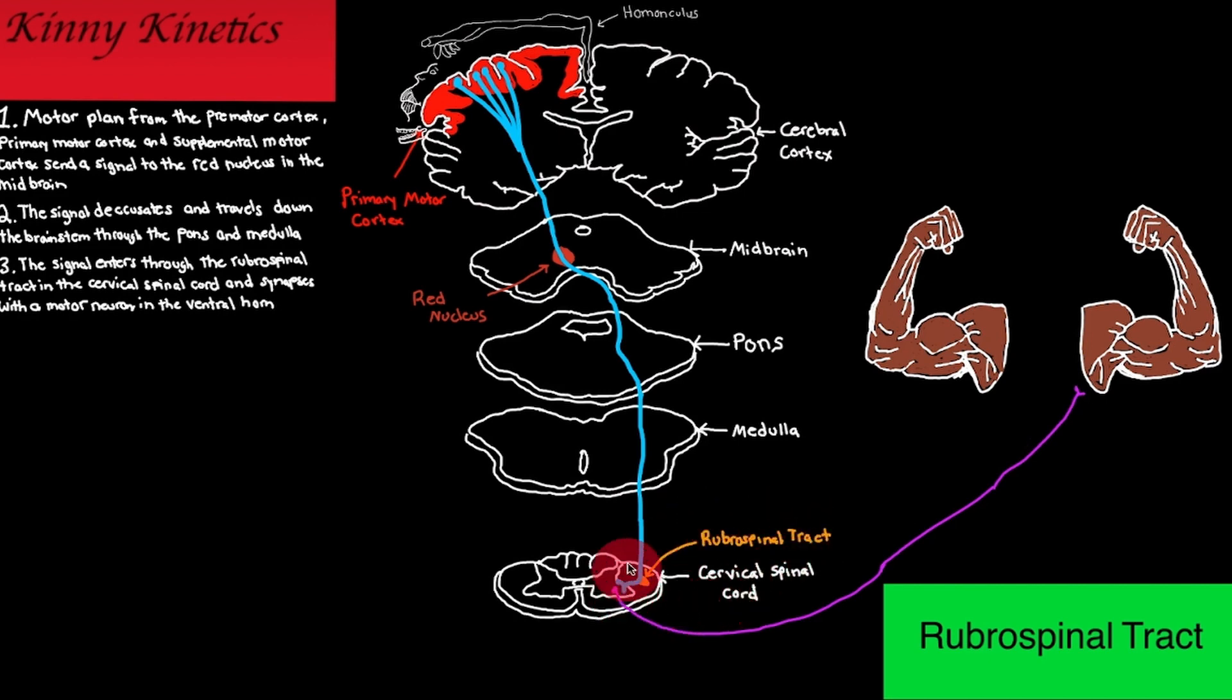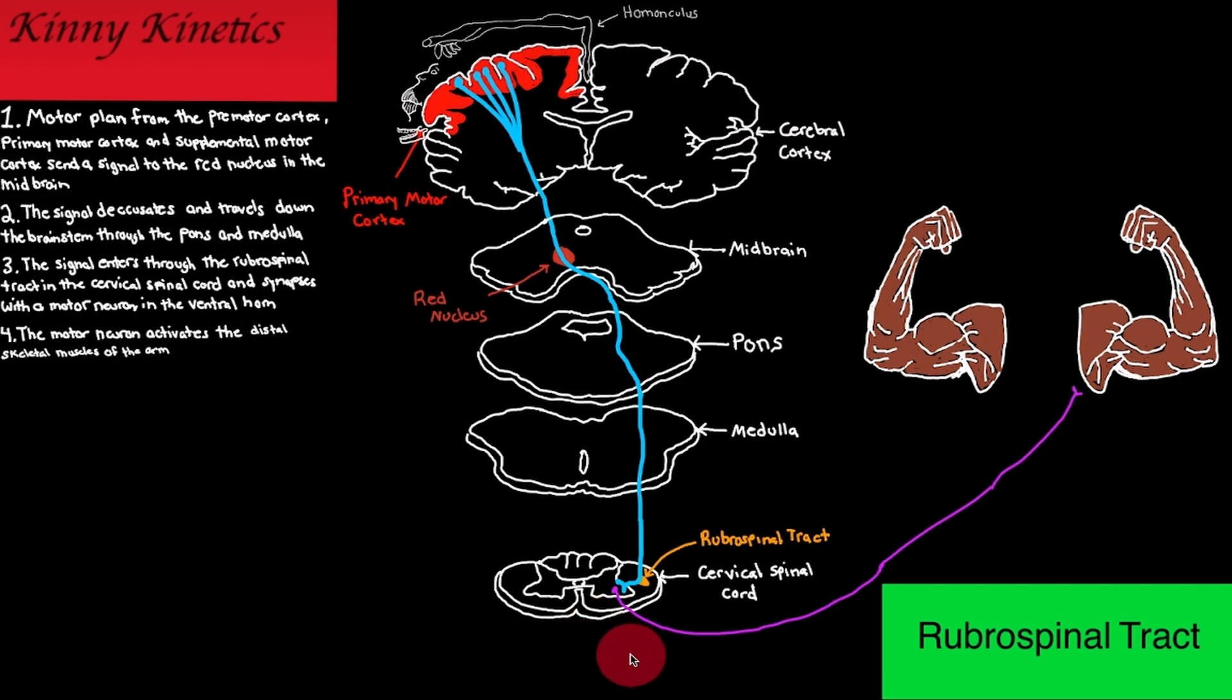Number three: the signal enters through the rubrospinal tract within the lateral aspect of the spinal cord and synapses with the motor neuron in the ventral horn. Number four: the motor neuron activates the distal skeletal muscles of the arm.